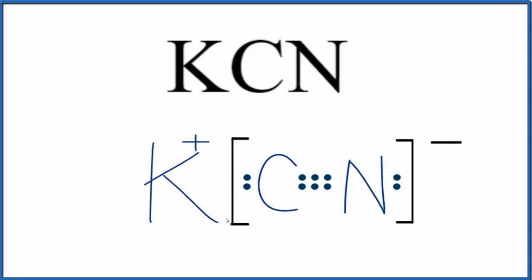So for our Lewis structure, we want to show that the electron was transferred, it's not shared. So we put these brackets around the ion, the negative ion here, and that shows that these electrons right here, they're not shared between the potassium and the cyanide ion. The potassium has transferred its one valence electron to the cyanide ion, giving it that negative charge.